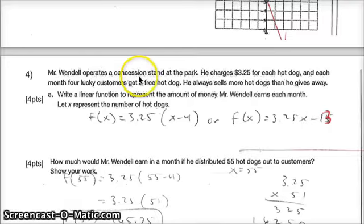I believe these questions were very similar to the quiz number I think you took in class number 11. Mr. Wendell operates a concession stand at the park. He charges $3.25 for a hot dog, and each month, 4 lucky customers get a free hot dog. He always sells more hot dogs than he gives away. Write a linear equation to represent the amount of money Mr. Wendell earns each month. Let x represent the number of hot dogs.